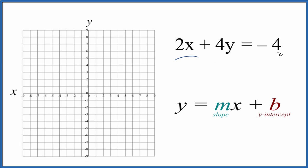So we need to rearrange our equation here, 2x plus 4y equals negative 4, into this format. We want y to be by itself.